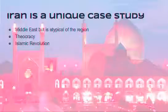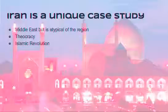Most of its neighbors are Sunni Muslims, and they are Shia Muslims, so it is atypical of the region. It's an interesting thing to pick to represent the Middle East as our case study, when in fact it doesn't really represent the Middle East. It's interesting that it's a theocracy — it is the only theocracy that we're going to cover as part of the AP6, and so that provides a unique opportunity to contrast the role of religion.